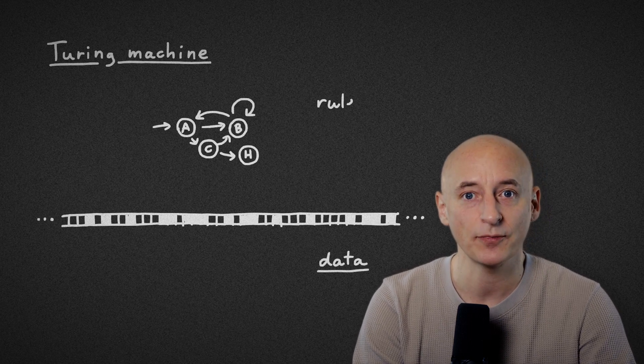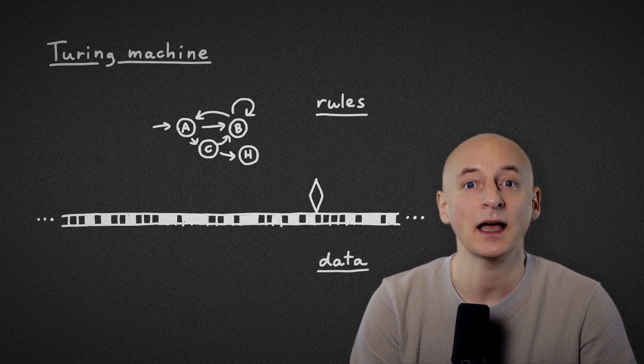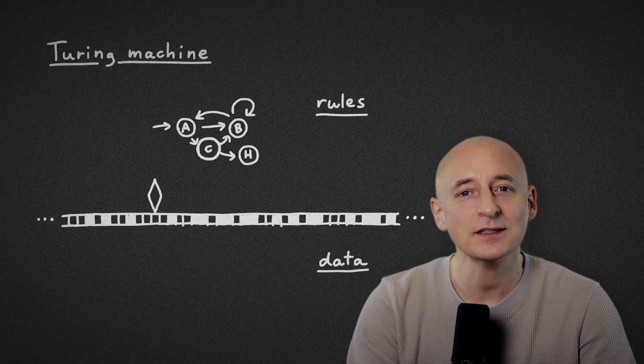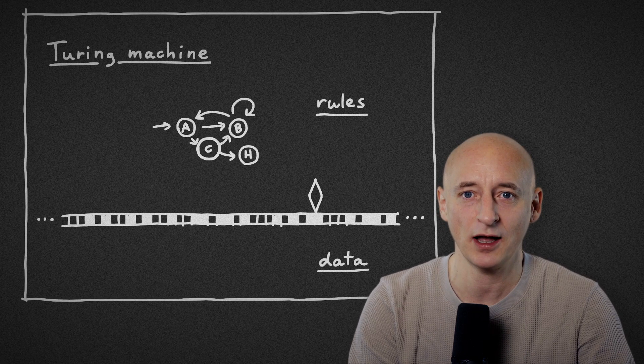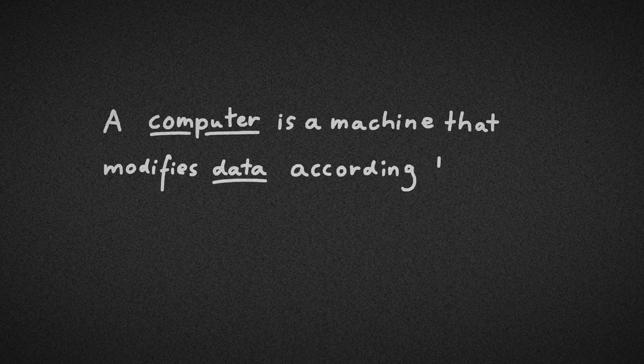there is an endless table of data and two, a table of rules. A reading and writing head moves along the tape, reads the data and, according to the rules, changes its value. This Turing machine is the first step of our answer – a computer is a machine that modifies data according to rules.